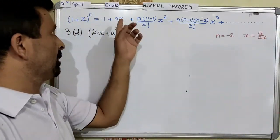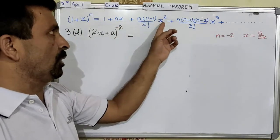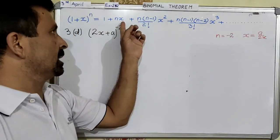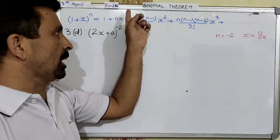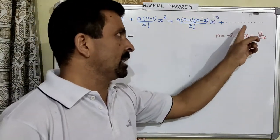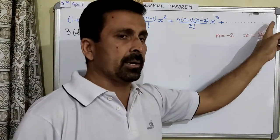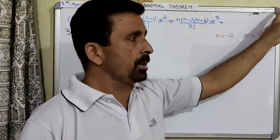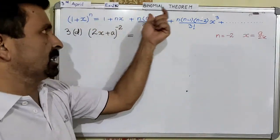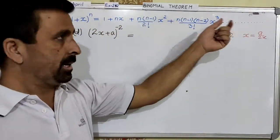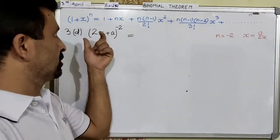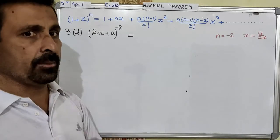Similarly, the power — the degree of x — will also go on increasing. The degree of this x is 1, the degree of this x is 2, the degree of this x is 3, and then next the degree of x will be 4 and so on. So we will just follow this track and try to write the binomial expansion.